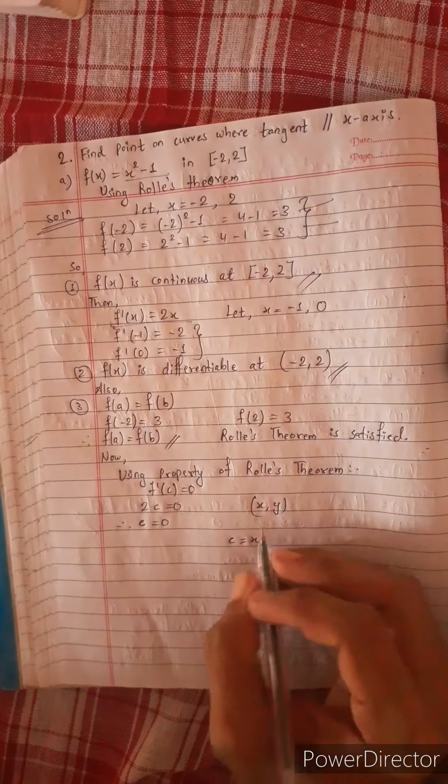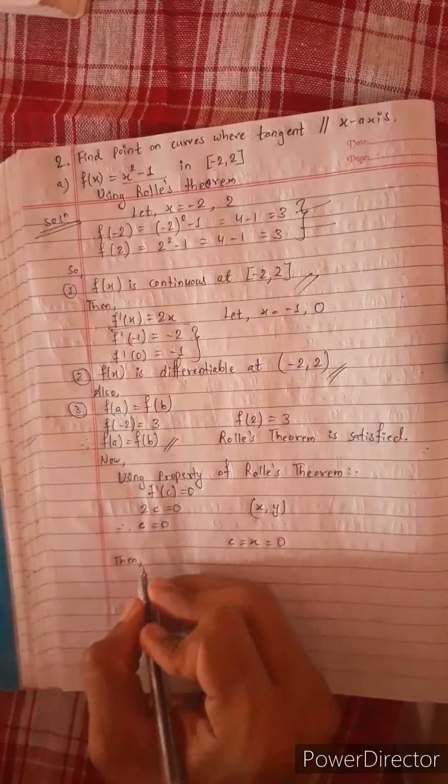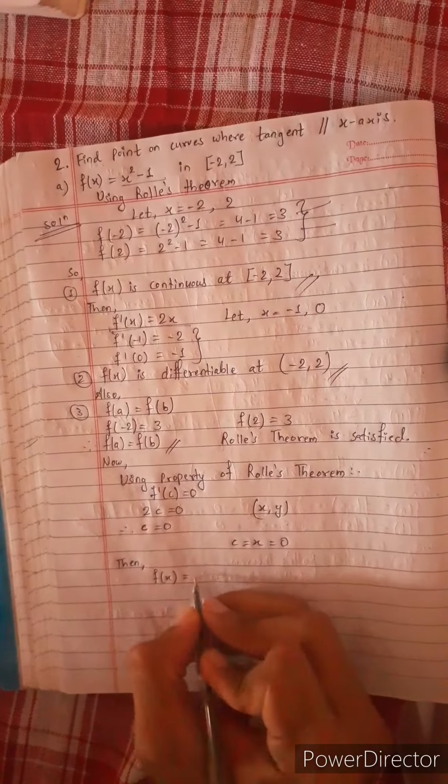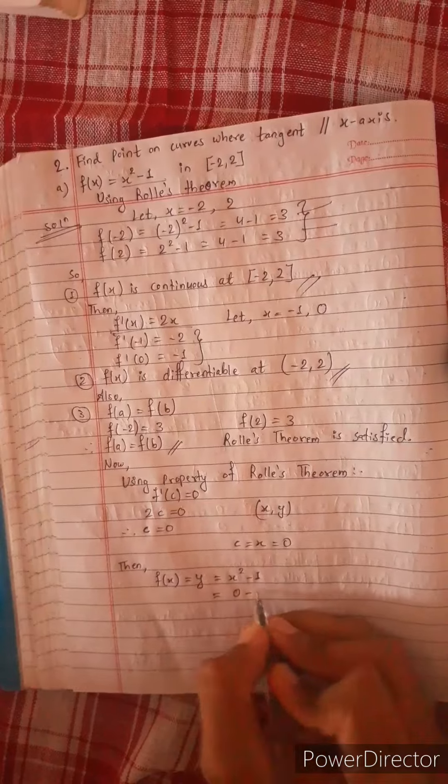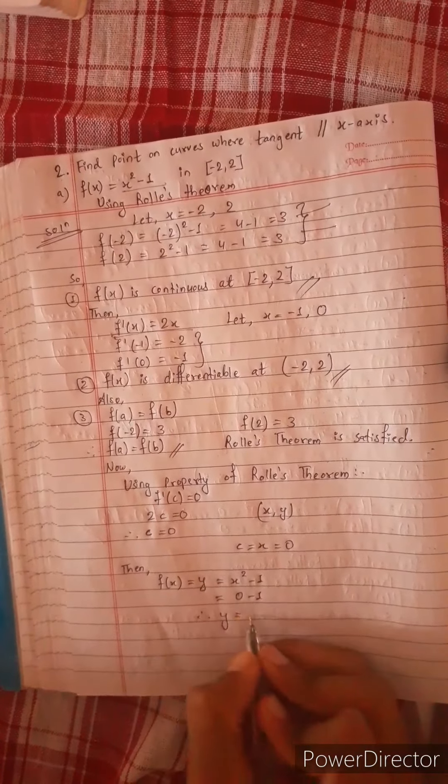And then x coordinate and y coordinate. x is equal to y. x square minus 1, x square minus 0. Therefore, y equals to minus 1.